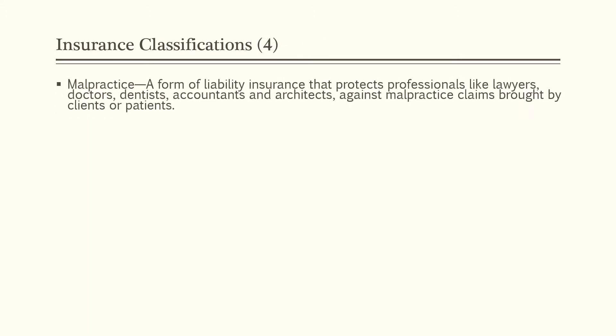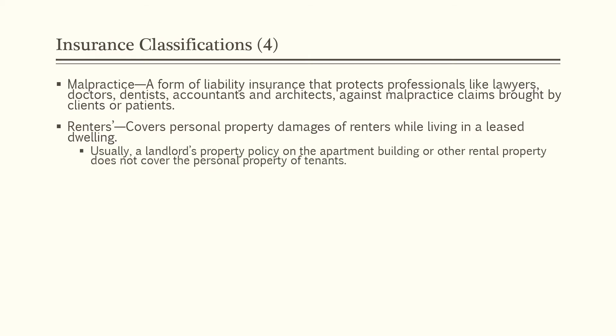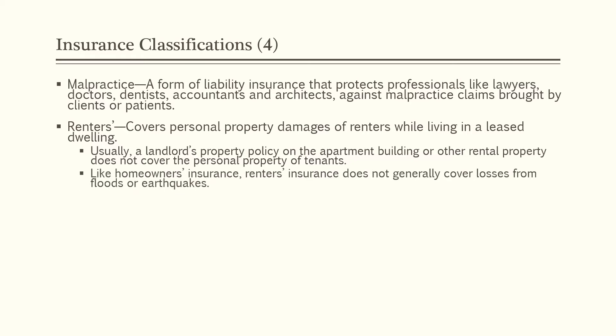The next type of major insurance is malpractice insurance. This is a form of liability insurance that protects professionals like lawyers, doctors, dentists, accountants, and architects — basically any qualified professional — against malpractice claims brought by clients or patients. Then there's renters insurance, which covers the personal property damages of renters while living in a leased dwelling. Usually a landlord's property policy on the apartment building or other rental property does not cover the personal property of tenants. Like homeowners insurance, renters insurance does not generally cover losses from floods or earthquakes.